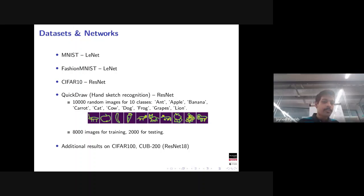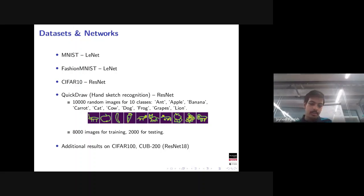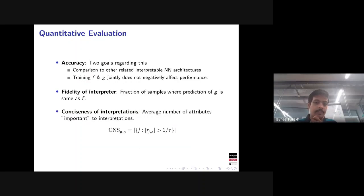CIFAR-10 and QuickDraw are more challenging than MNIST or Fashion-MNIST, justifying the larger network, though they still involve smaller-scale images. We also validated the method on larger datasets: CIFAR-100 and CUB-200, a bird classification dataset.